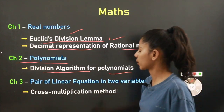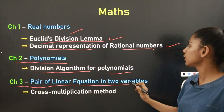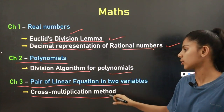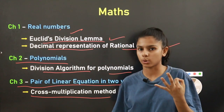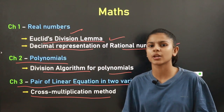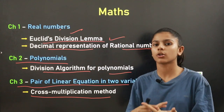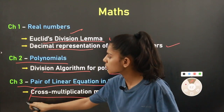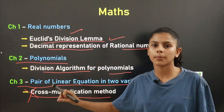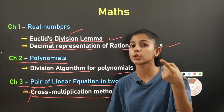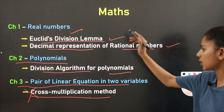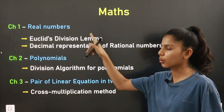Chapter number three is Pair of Linear Equations in Two Variables. The cross-multiplication method has been reduced from this chapter. There are three methods to solve a pair of linear equations: elimination method, substitution method, and cross-multiplication method. The cross-multiplication method is removed, so you will only use substitution and elimination methods.